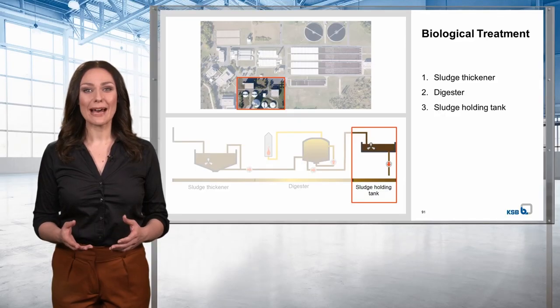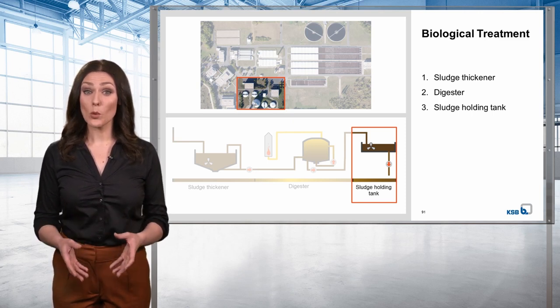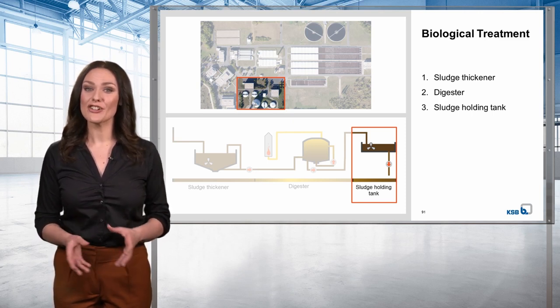A brief recap: sludge treatment involves the processes of sludge being collected, thickened, de-watered, and transported away. Wastewater treatment is a complex process in which the water passes through many different stations, including mechanical treatment, biological treatment, and sludge treatment. Today, thanks to Pettenkofer, we are in a position to offer our treated water in the best quality.